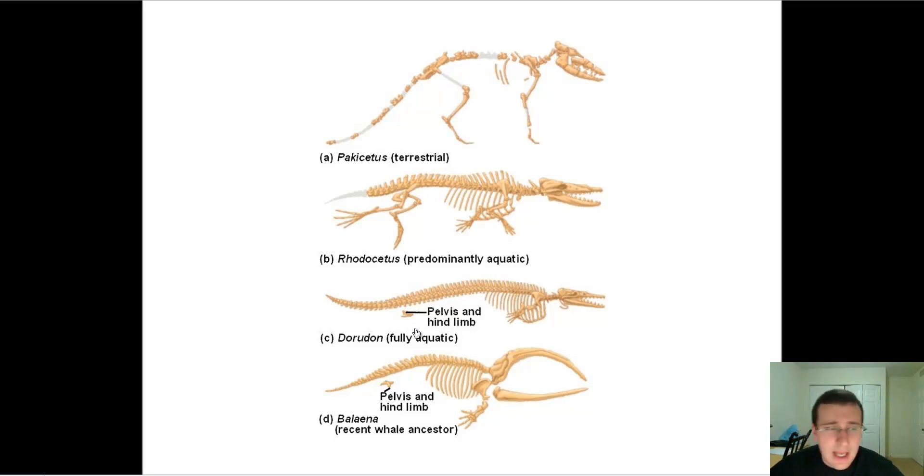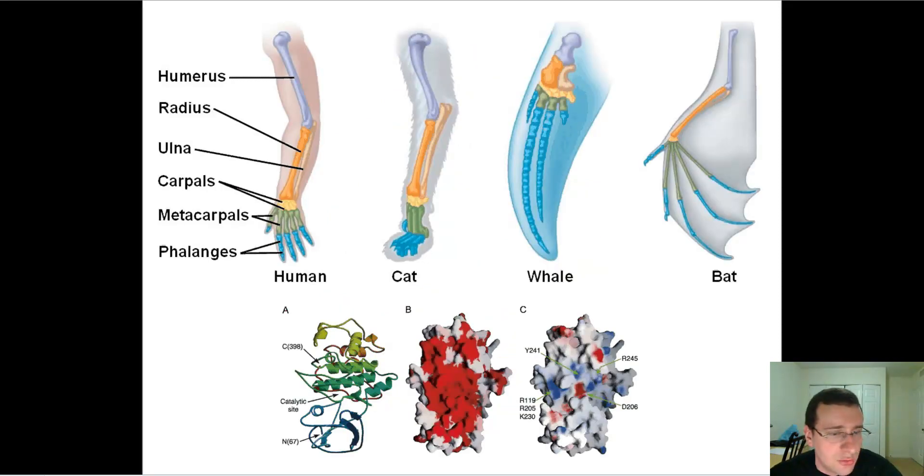Now, you see how this is a transition that I'm talking about, and you can track the homology across them. Here's another example of homology structures. You see that the cat, the whale, the bat, and the humans are all mammals.